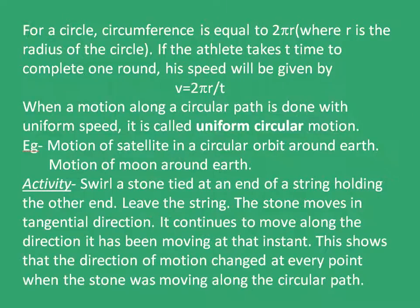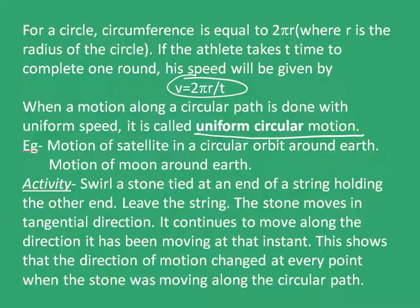For a circle, circumference equals 2πr, where r is the radius. If the athlete takes time t to complete one round, his speed is the distance traveled, 2πr, divided by the time taken t. When motion along a circular path is done with uniform speed, it is called uniform circular motion — for example, the motion of a satellite in a circular orbit around Earth, or the motion of the Moon around Earth.